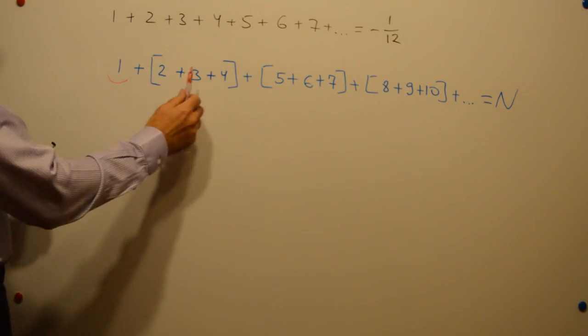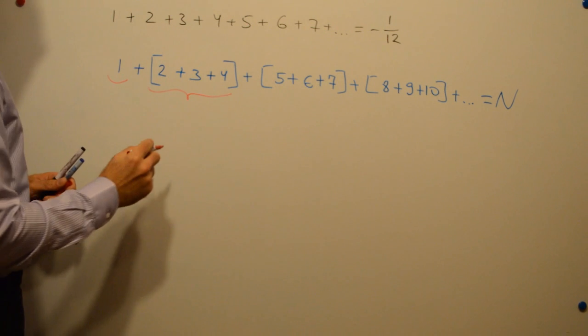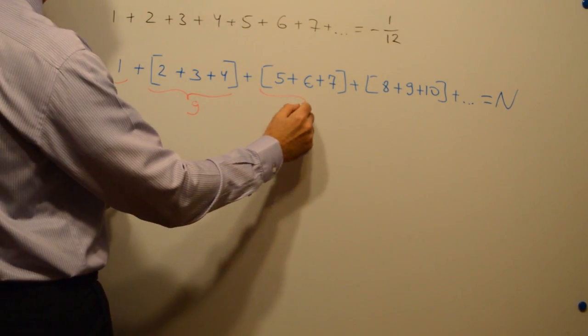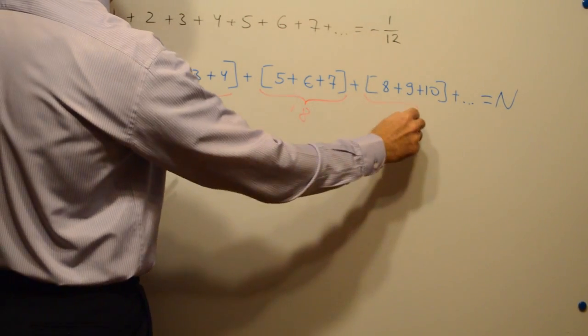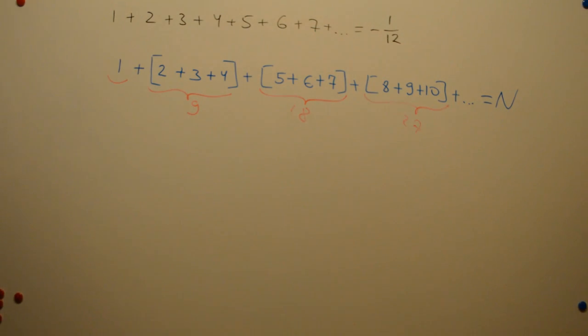And then we get these groups of 3, each of them is equal to 9, 18, 27 and so on. They all appear to be multiples of 9.